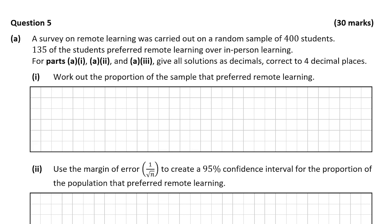Question A tells us that a survey on remote learning was carried out on a random sample of 400 students. 135 of the students preferred remote learning over in-person learning, and we are asked for parts A1–3 to give all solutions as decimals correct to 4 decimal places.